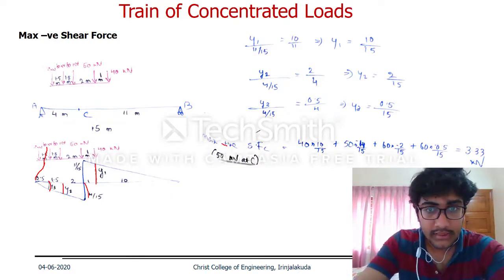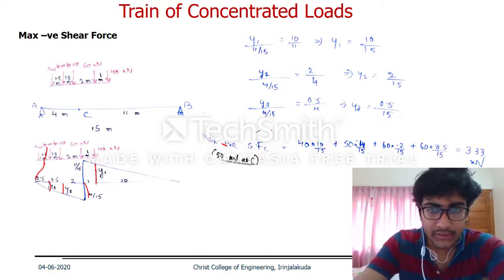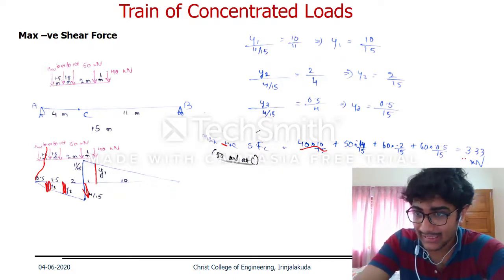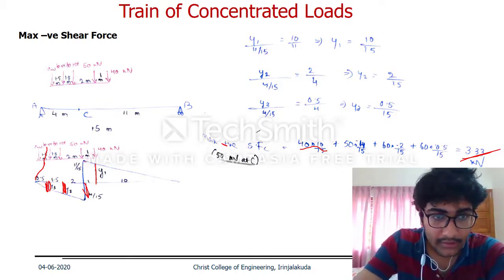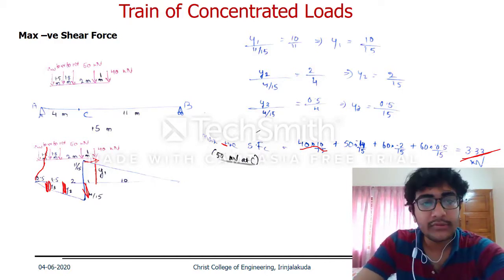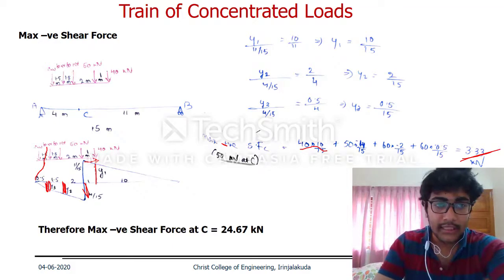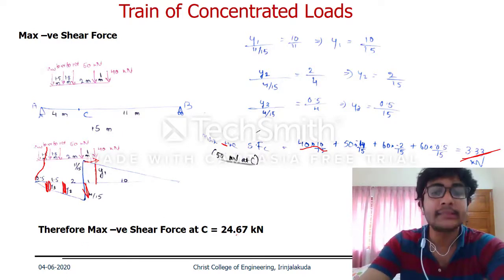y3 is obtained as 0.5/15. Now calculating the maximum negative shear force when the 50 kN load is at C: 40 times 10/15 plus 50 times minus 4/15 plus 60 times minus 2/15 plus 60 times minus 0.5/15. The value is 3.33 kN.